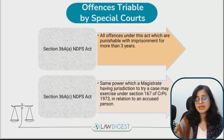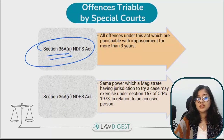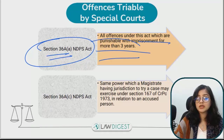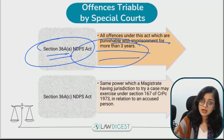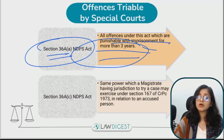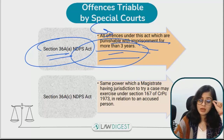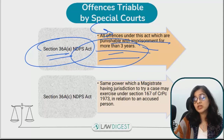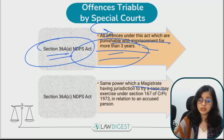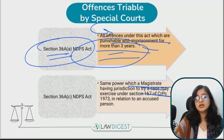Offenses under the NDPS Act are tried by special courts. Special courts try offenses where the punishment is more than three years. If someone has committed an offense punishable for more than three years, it will be tried by special courts. The power of these special courts is the same as that of a magistrate to try a case under Section 167.